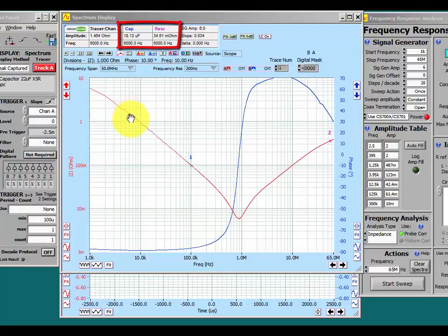As we move the cursor, the tracer on the plot we can see the capacitance changing. And this is quite useful for checking out the performance of the capacitor over frequency. Here we see it sort of stabilizing at about 16 microfarads.